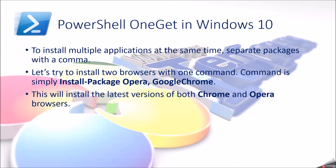To install multiple applications at the same time, separate package names with a comma. Let's try to install two browsers with one command. The command is simply Install-Package opera, googlechrome. This will install the latest versions of both Chrome and Opera browsers.